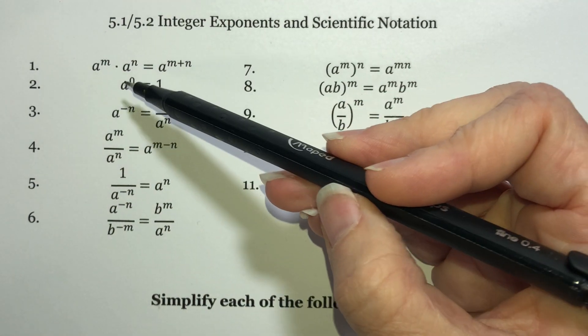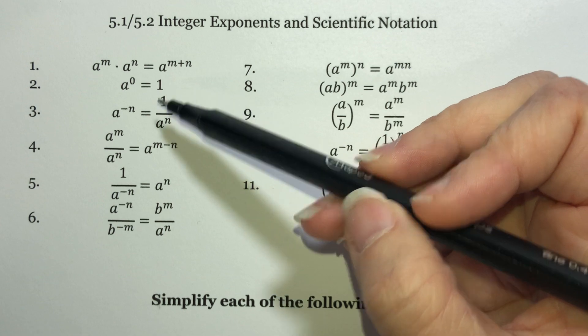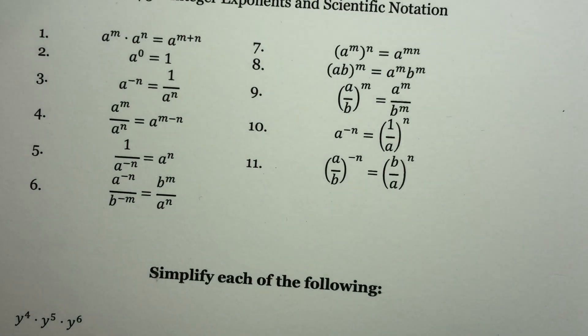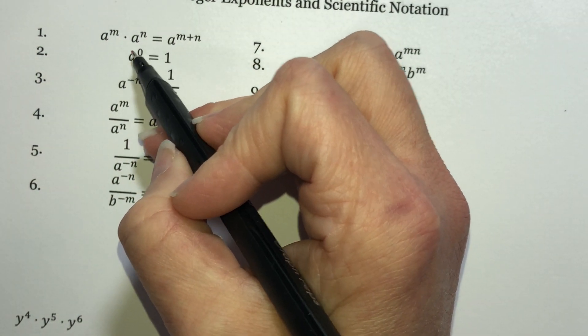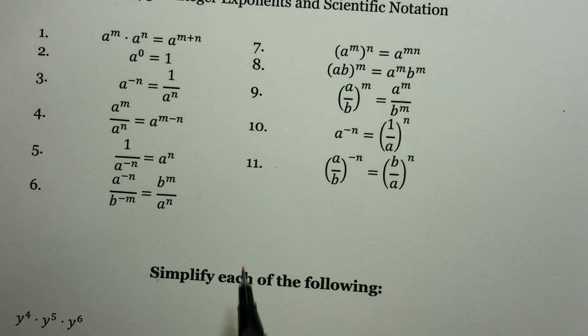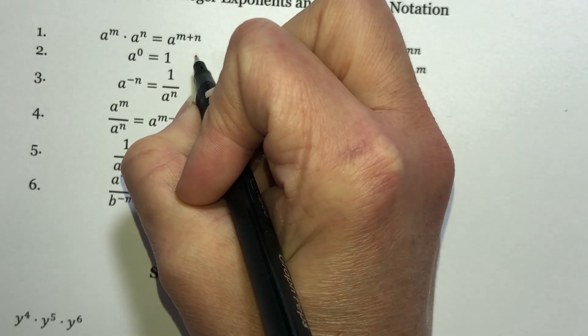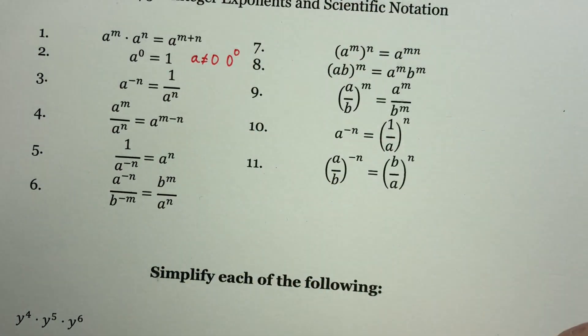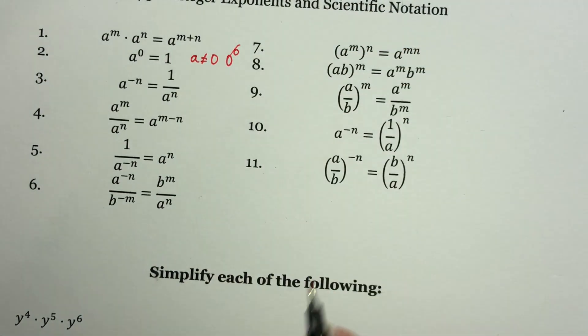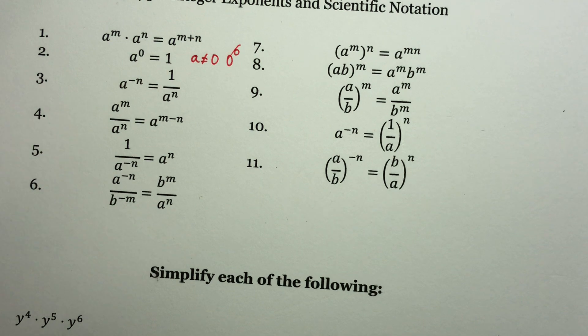Second property, anything to the zero power is one. This is easy. People make it hard all the time. If it's got a zero, if it's something raised to the zero power, it's one, period. Note, a cannot equal zero. We don't do zero to the zero power, but that's a special case. It doesn't come up in the course, so don't worry about it. But it is true.